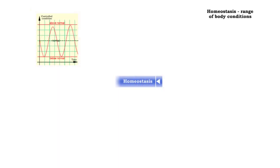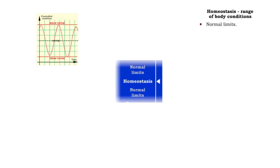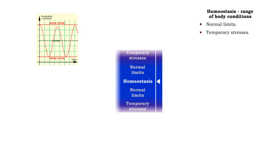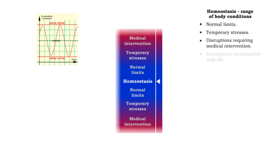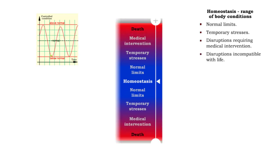Changes in the internal environment can vary from minor to significant, and are categorized as normal limits, disruptions caused by temporary stresses, disruptions requiring medical intervention, and severe disruptions that cannot be restored and are incompatible with life.